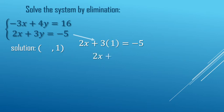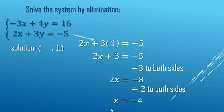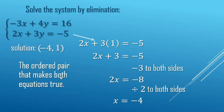So go ahead and do the multiplication. 2x plus 3 equals negative 5. Subtract 3 from both sides, and then divide by 2 to both sides, and so the x value is negative 4. So negative 4 comma 1 is the ordered pair that makes both equations true.